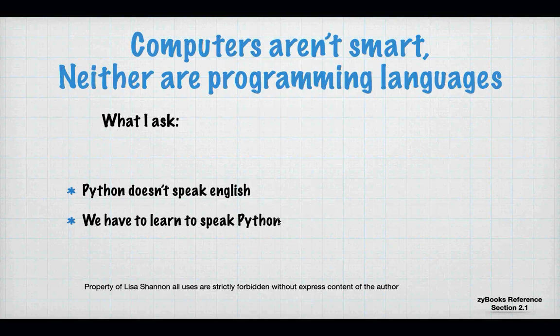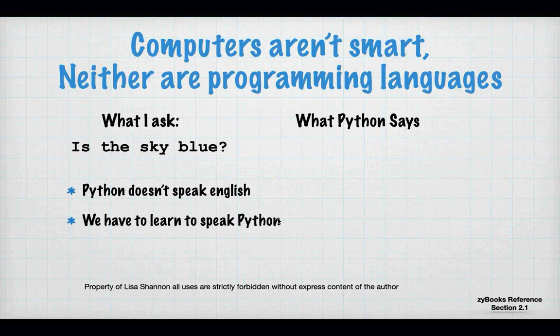Computers aren't smart, neither are programming languages. People think computers are these brainiac things, but they're not. Computers are actually binary machines with one of two states - something is on or something is off. It's like a light switch, not even a dimmer switch. It's literally on and off. Because of that, we have to learn how to ask a computer a question in the right way so it can give us an answer.